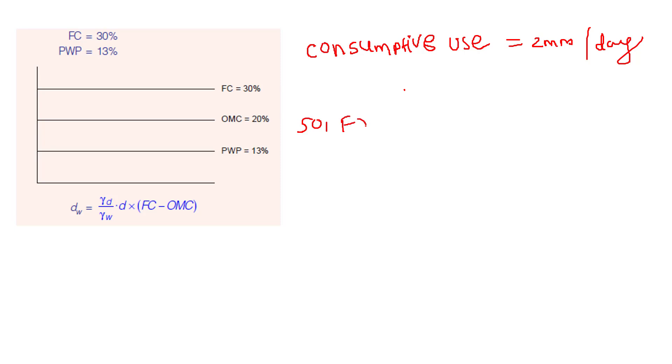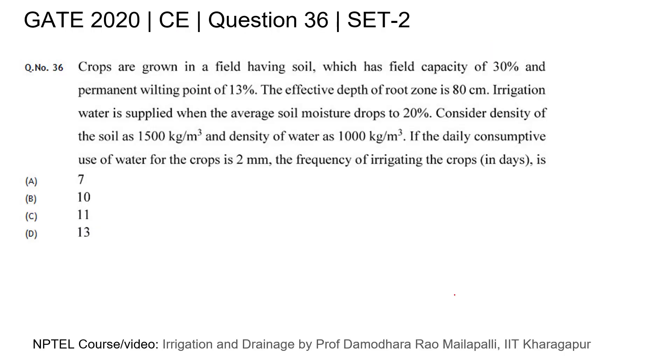Frequency of irrigation we can easily calculate as the depth in mm divided by consumptive use, that is 2 mm per day. It will come out to be 60 days. So our answer will be 60.